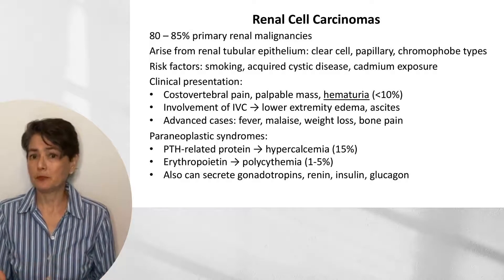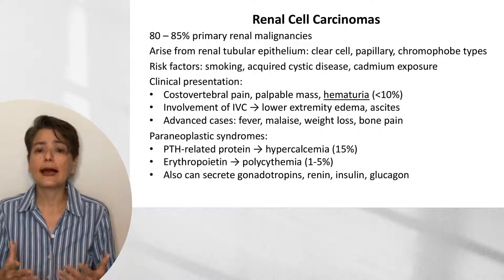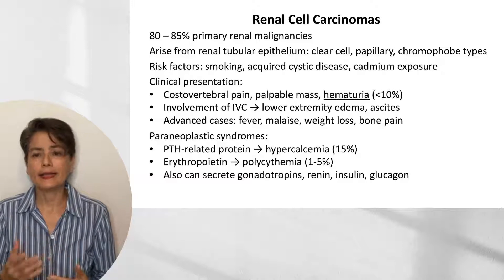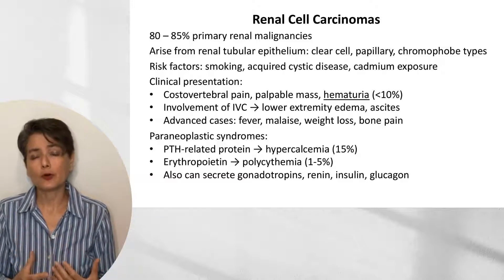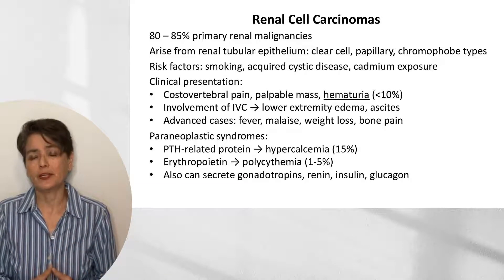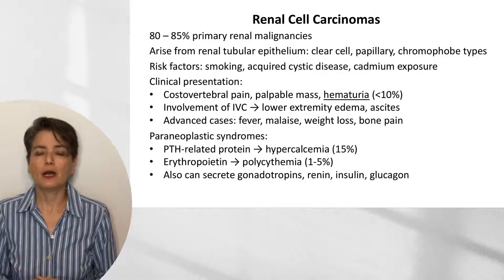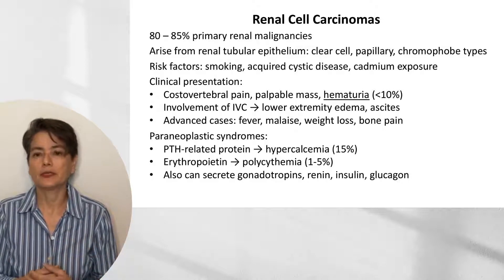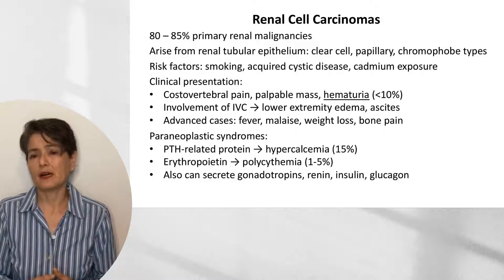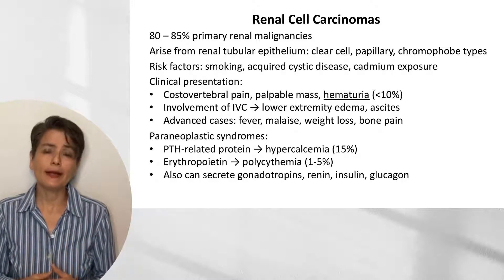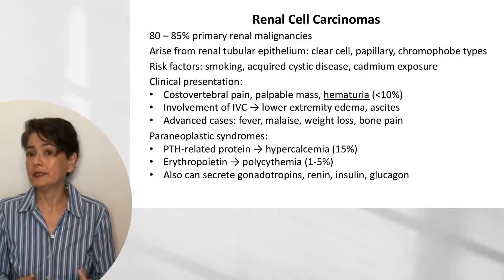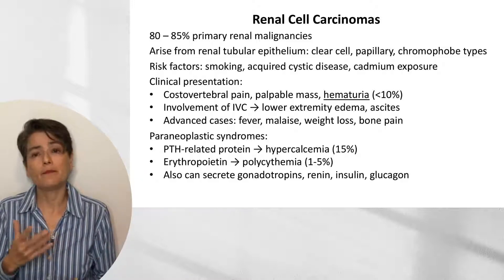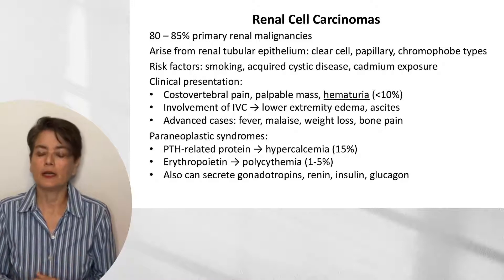How do these tumors typically present? There is the classic triad of costovertebral pain, palpable mass, and hematuria, but this complete triad is seen in less than 10% of patients. The most common presentation is hematuria, seen in about 40% of cases. The hematuria may be intermittent or microscopic, so the patient may not notice it — it may be picked up on screening urinalysis.